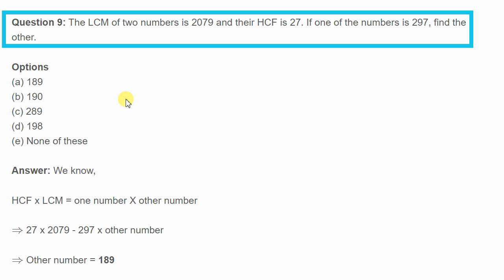Now the next question: the LCM of two numbers is 2079 and HCF is 27. You have two numbers A and B. If one of the numbers is 297, then you have to find the other number.